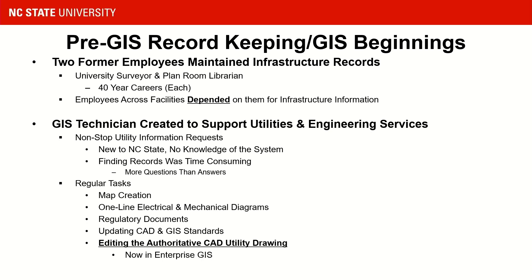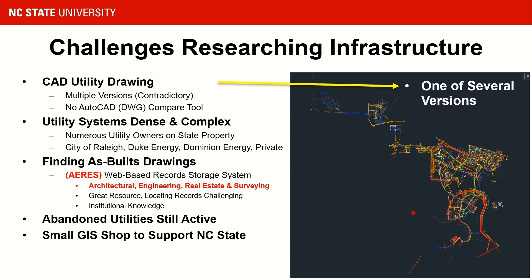My role was created in 2015, and right away people were constantly requesting utility-related information. I was new to NC State, had no knowledge of the system, and researching records was very time-consuming — I was often left with more questions than answers. On top of that, I had all my regular tasks: creating maps, updating one-line diagrams, regulatory documents for stormwater and spill prevention, updating our CAD and GIS standards, and maintaining our authoritative CAD drawing, which has now been converted into GIS.